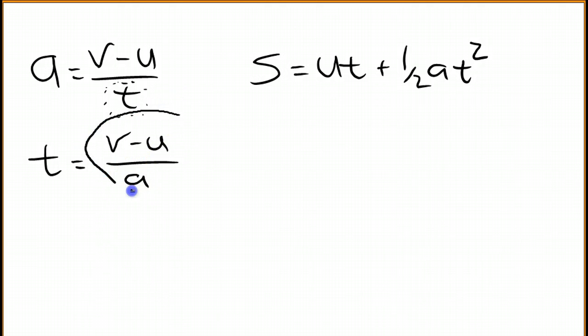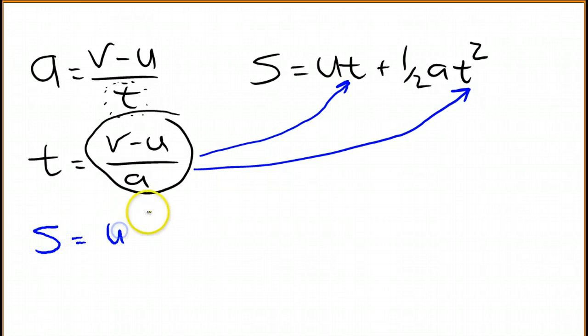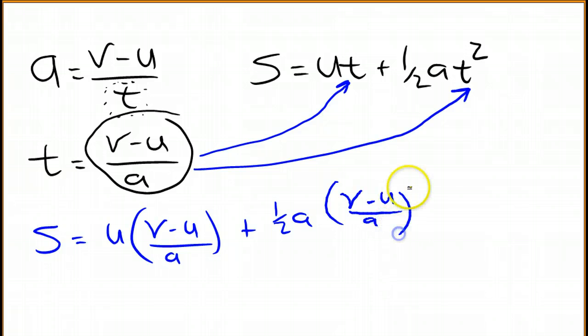I'm going to take that quantity and move it into here where there's a t and then here where it's going to become squared. So s equals u times v minus u over a plus one half of the acceleration times v minus u over a squared.